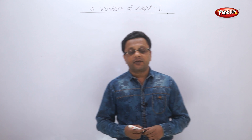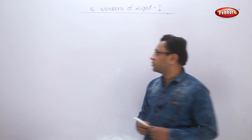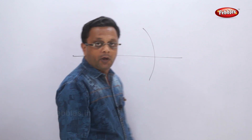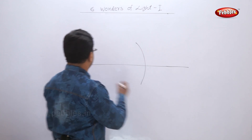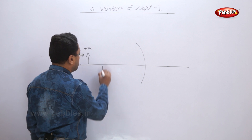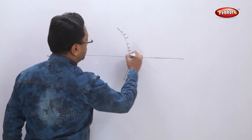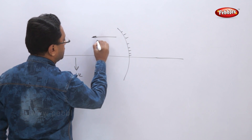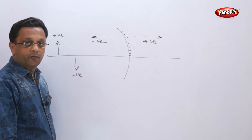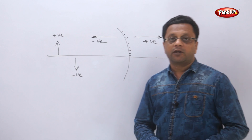Before going to the lenses, let us first see the sign convention — when to take the positive sign and when to take the negative sign. In the case of a mirror, let us draw the principal axis. The height upward is always positive and height downwards is always negative. For a concave mirror, the distance towards the left is negative and distance towards the right is positive. You should memorize this figure, because the question may be asked: what are the sign conventions in the case of mirrors?